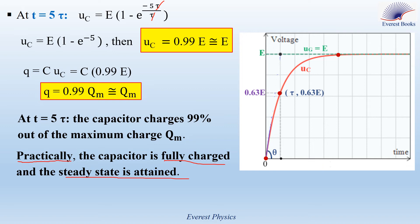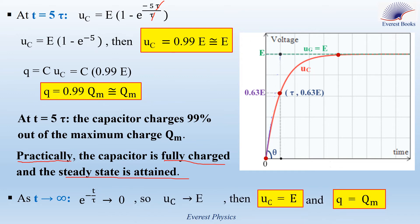Remark: the expressions of UC in terms of E at T equal tau and at T equal 5 tau should be memorized by students, unless they are asked to prove them. When T tends to infinity, e to the power minus infinity tends to 0, so UC tends to E and Q tends to QM. We conclude that theoretically the capacitor is fully charged as T tends to infinity.